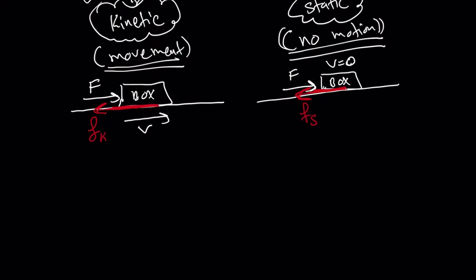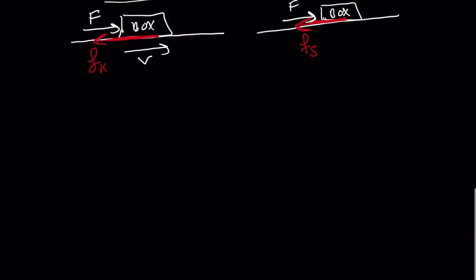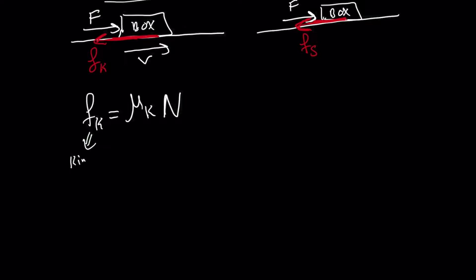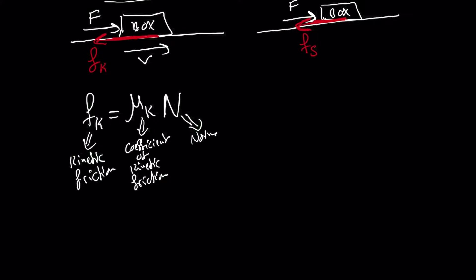How do we calculate the force of friction? Let's start with kinetic friction. Kinetic friction involves movement, and both types — static and kinetic — depend on two things: the nature of the surface, represented by mu k, the coefficient of kinetic friction. Note that the coefficient for static friction and kinetic friction are different even for the same material — it's important to keep this in mind. The second factor is the normal force. The kinetic friction equals mu k multiplied by the normal force N.